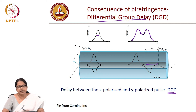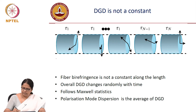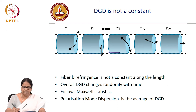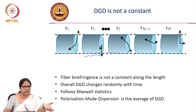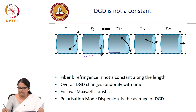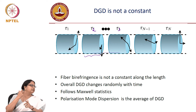Is DGD constant for a given piece of fiber? If you take a large piece of fiber, chop it into smaller sections, and measure the delay, you get tau1 in one section. The next section gives tau2 because the built-in stress, cabling, and environmental conditions are different. Each section of the fiber experiences a different differential group delay.